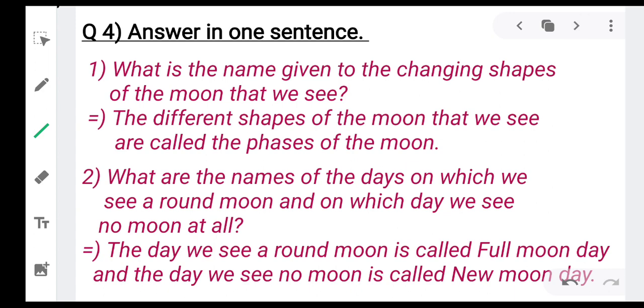Now question 4, answer in one sentence. Number one is, what is the name given to the changing shapes of the moon that we see? So the answer is, the different shapes of the moon that we see are called the phases of the moon.